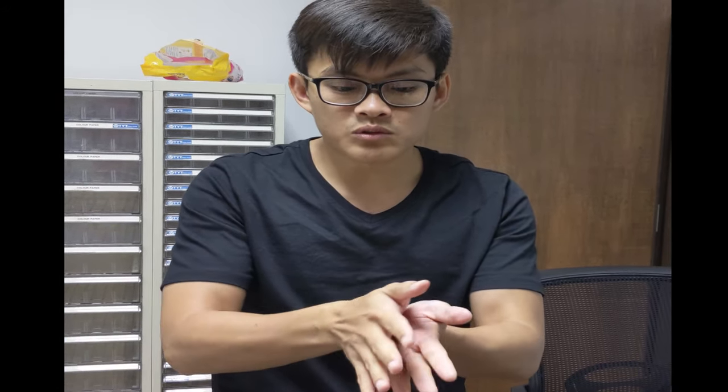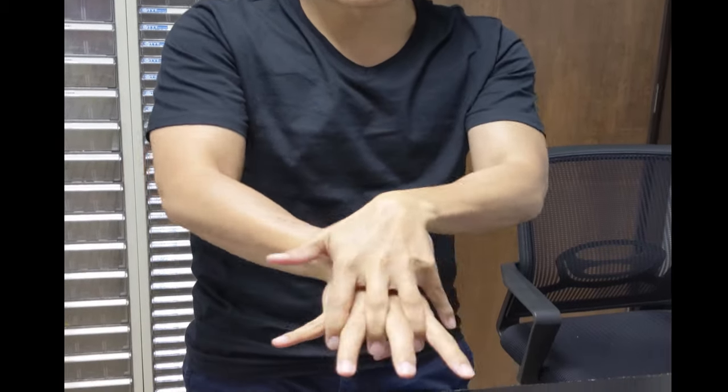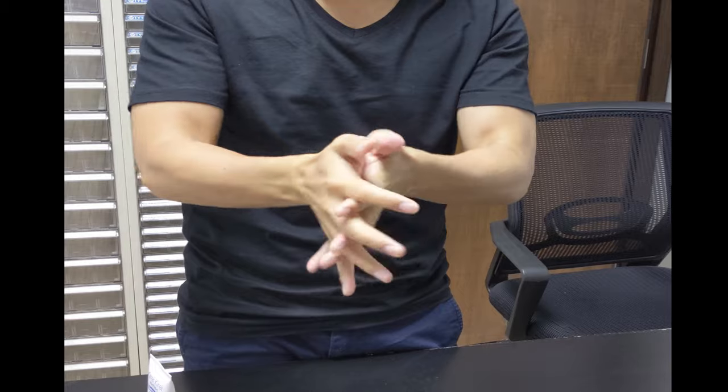I will quickly repeat the seven steps once again. After squeezing some hand sanitizer on your palm, the first step is to rub the palms together. Then do the back of your hand, interlace your fingers. Not forgetting, the third step is to do your finger webs.